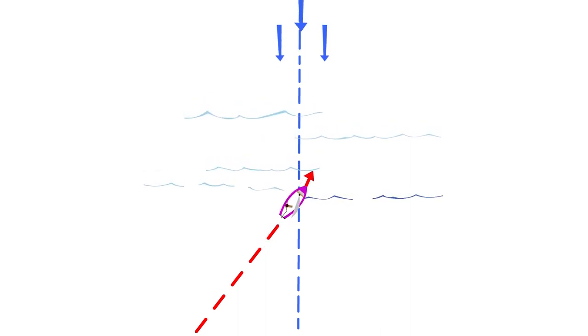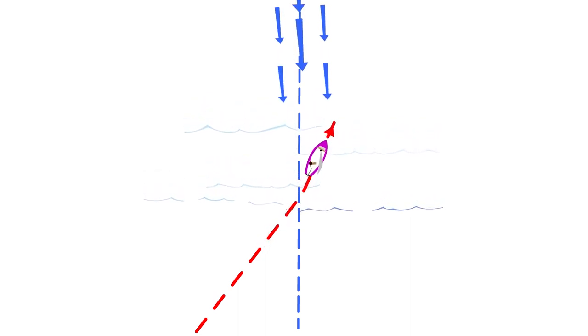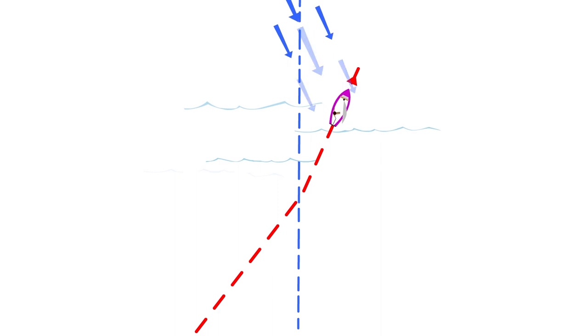When we are racing, we try to stay on the lifted tack as much as possible, because that steers us closer to the mark and we sail less distance. It's like being able to point higher with no loss of speed.